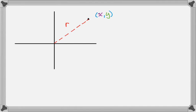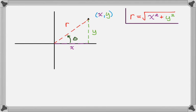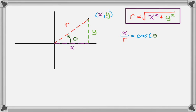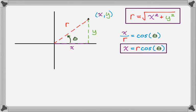I'm connecting to the origin and calling that R, and this angle theta. I'm going to sketch in the right triangle that has one side X and one side Y. So R is just going to be the square root of X squared plus Y squared — that's the Pythagorean theorem. From the right triangle, X over R is cosine theta, which means X equals R cosine theta.